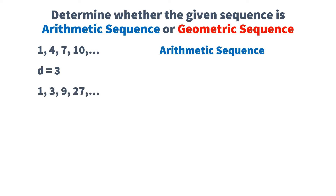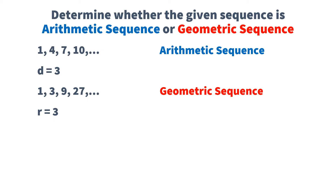Let's have another one. 1, 3, 9, 27, and so on. So obviously, you are multiplying 3 on the terms of this sequence. So therefore, your common ratio is 3. So this is a geometric sequence.